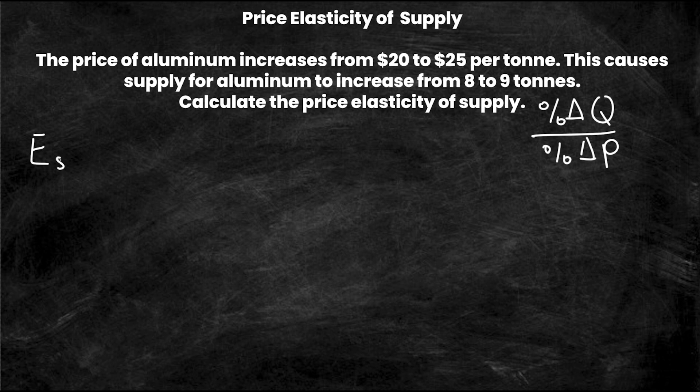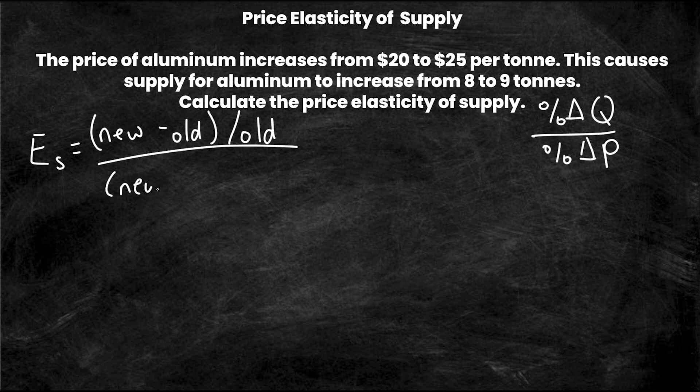Elasticity of supply Es equals new minus old over old, over new minus old over old. And obviously on the top we're talking about new Q old Q old Q and on the bottom we're talking about new P old P old P. So let's just sub in our values now.